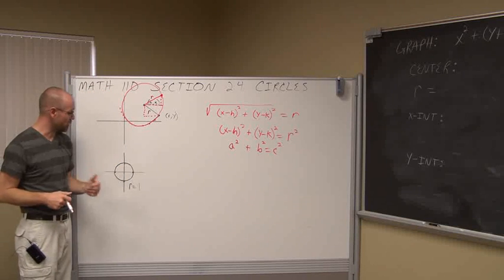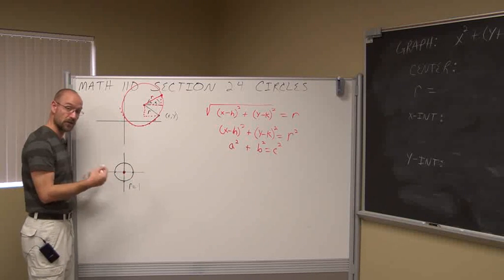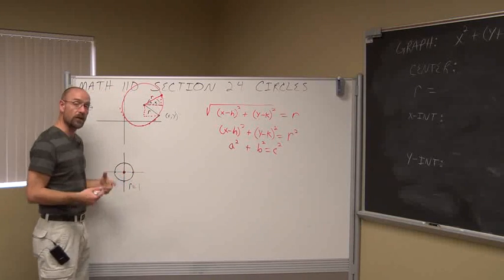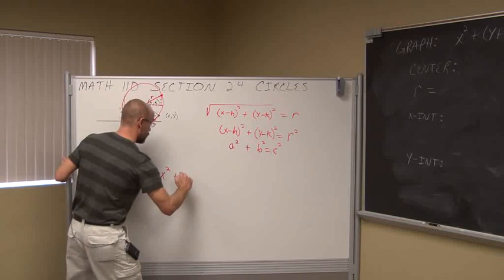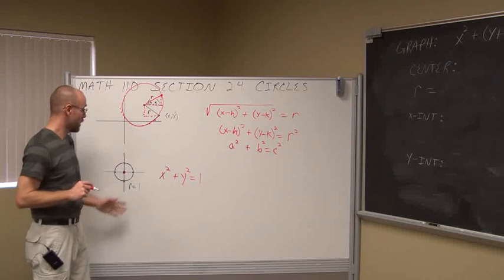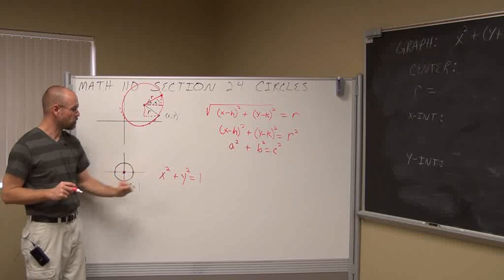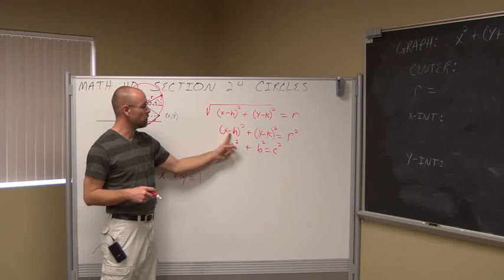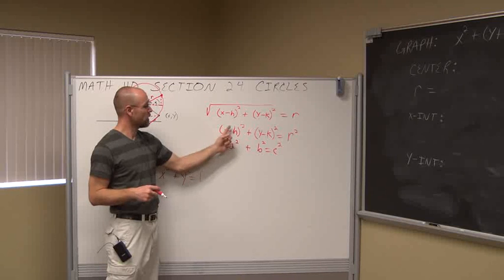One other thing we want to define: if we have a circle centered at the origin, where h is 0 and k is 0, we get what's called the unit circle when the radius is 1. The unit circle is centered at the origin with h and k equal to 0 and r equal to 1. When determining h and k, always keep in mind it's minus the h value and minus the k value — you're always going to see the opposite value inside that grouping symbol.